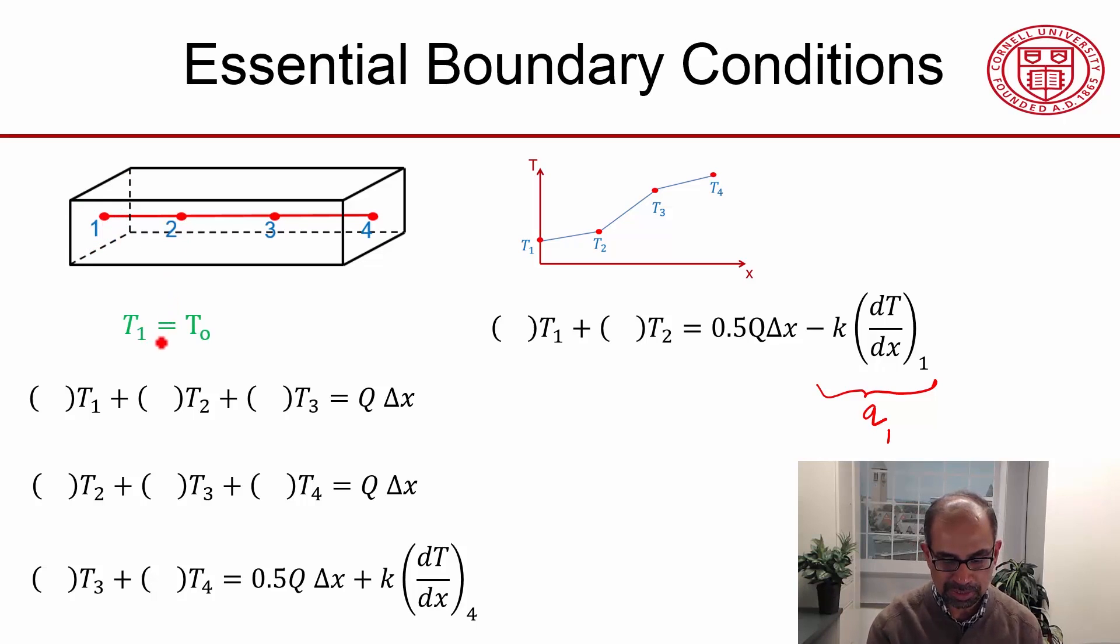Now I bring in the additional equation at node 1 from that temperature boundary condition. The shape that we have assumed has to essentially satisfy that equation. That is, this value of the nodal temperature has to be T-naught. It's essential for it, which is why this is known as an essential boundary condition.